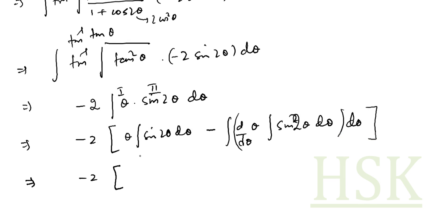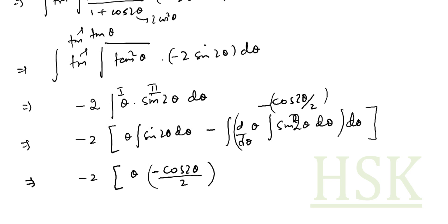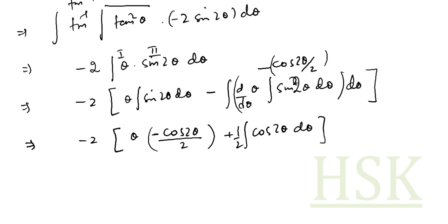On integrating sin 2θ, I get minus cos 2θ upon 2. The differentiation of θ becomes 1. Sin 2θ again integrates to minus cos 2θ upon 2, so minus minus becomes plus. This gives integration of 1 by 2 cos 2θ dθ. Multiplying through by minus 2, I get minus θ cos 2θ. Integration of cos 2θ gives sin 2θ, so I get 1 by 4 sin 2θ plus C.